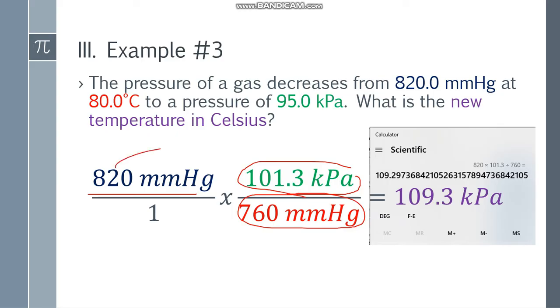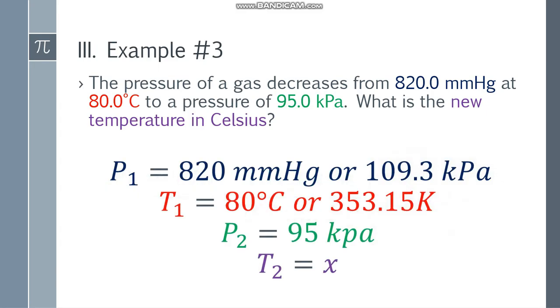So we'll use that. Take 820 mmHg, multiply by 101.3 kPa, and divide by 760 mmHg. Remember, these two are equal. Let's simplify: 820 times 101.3 divided by 760 gives us 109.3 kPa. The mmHg cancels out, leaving kPa.